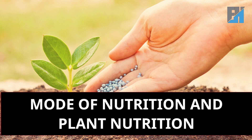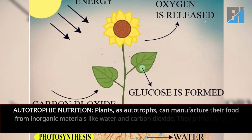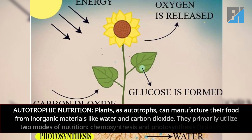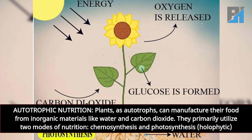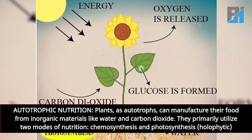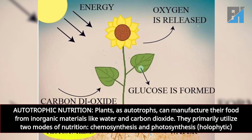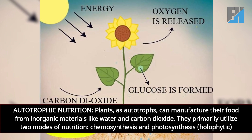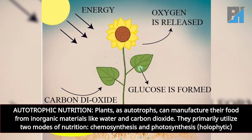Today's class will focus on exploring modes of nutrition and plant nutrition. Autotrophic nutrition: plants, as autotrophs, can manufacture their food from inorganic materials like water and carbon dioxide. They primarily utilize two modes of nutrition — chemosynthesis and photosynthesis, also known as holophytic nutrition.